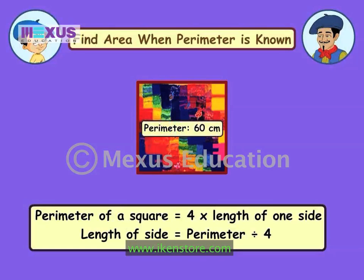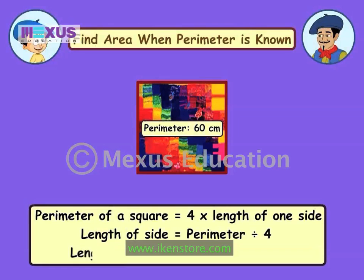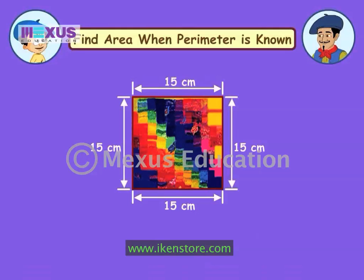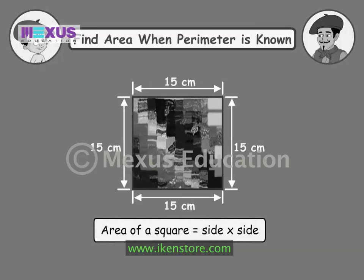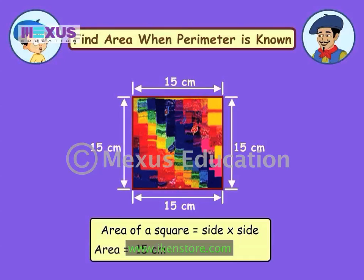That means we can divide the perimeter of a square by 4 to find out the length of its side. Let's calculate the area of this square. It has a perimeter of 60 centimeters. So to find out the length of its side, we will divide its perimeter, that is 60 centimeters, divided by 4, which is equal to 15 centimeters. Now that we know the length of its side, we can find out the area easily. All sides of a square are equal, so to find out its area, we simply multiply 15 by 15. The area of the square is 225 square centimeters.